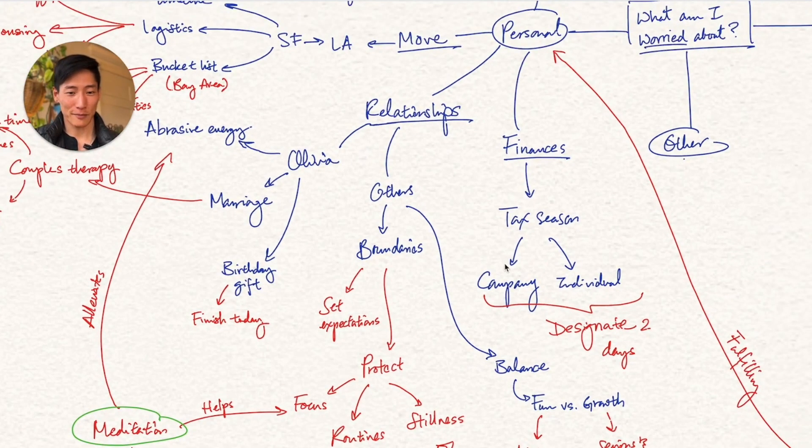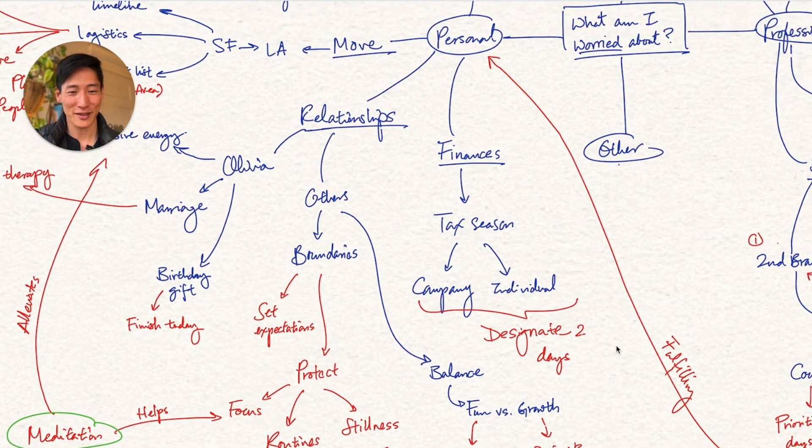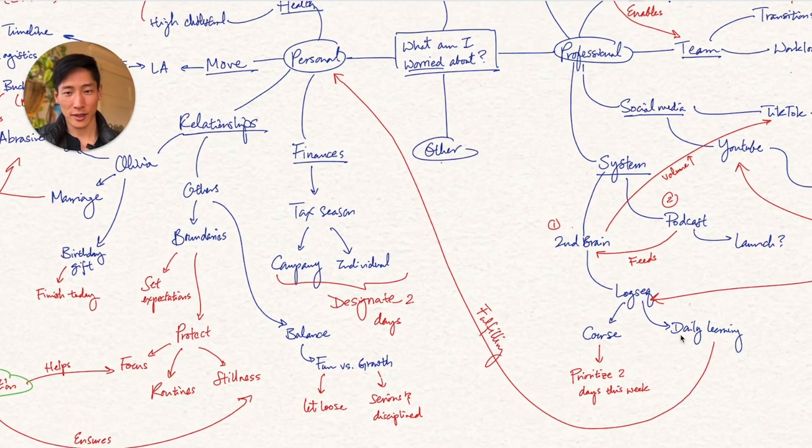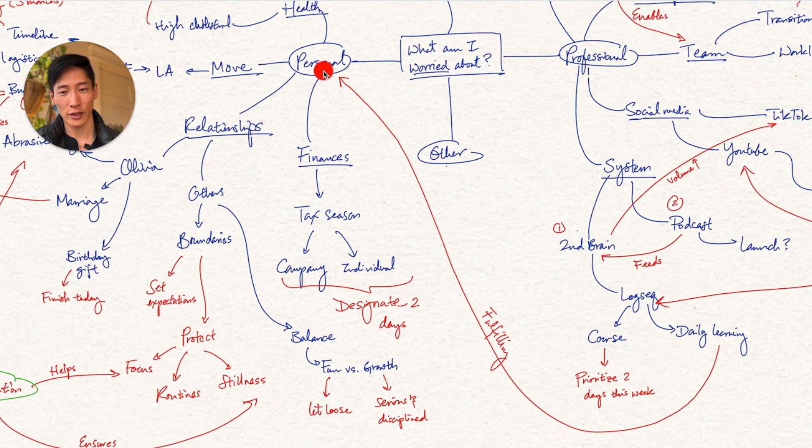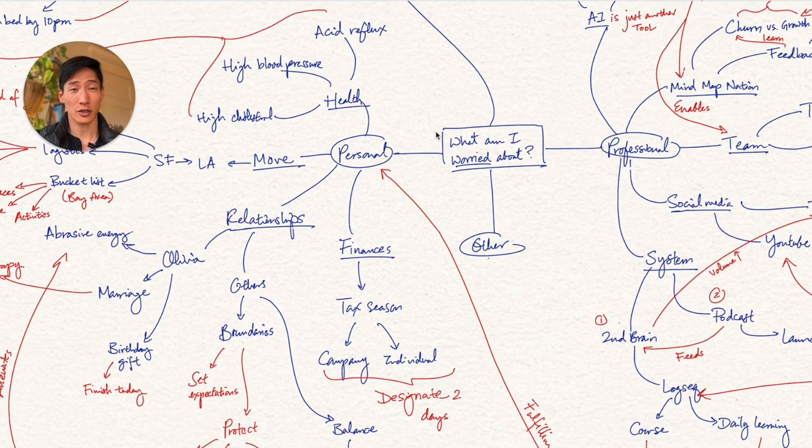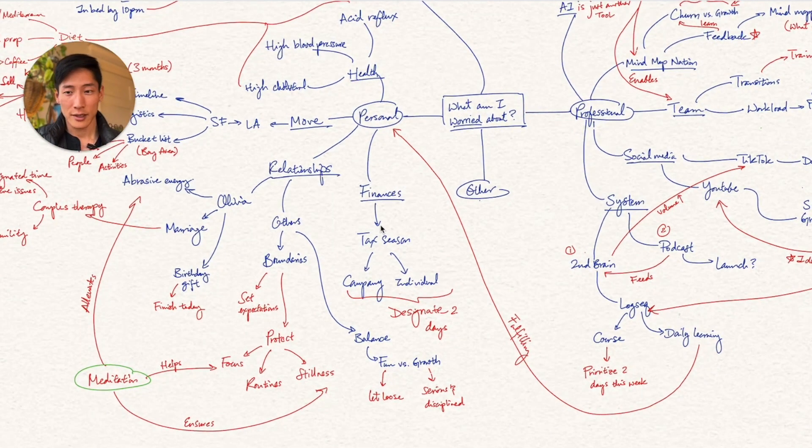What about finances? Well, tax season, company, individual, this is really just about carving out two days out of the next month to try to figure out what do I actually need to do? Manageable. But at the same time, I needed to list that out as an item. Otherwise, it's just going to be in the back of my head and causing me more stress and anxiety. You also notice that I drew an arrow from the second brain, daily learning to personal because it is fulfilling for me to actually learn and know that my knowledge and my wisdom is actually accumulating over time.